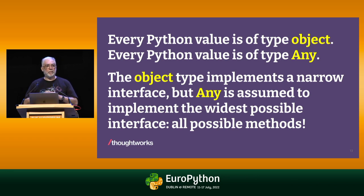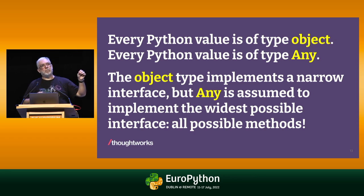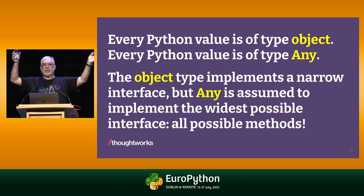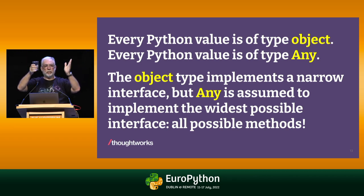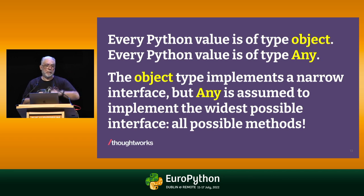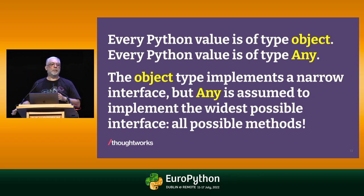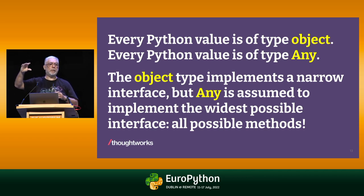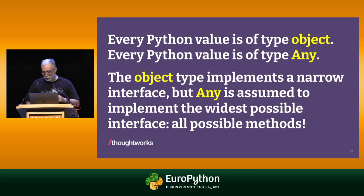Any satisfies every interface — it's like this magical interface that contains all possible methods that exist today or that will ever exist. So this is a crucial difference. If you think of subtypes as sets, the biggest set is at the top: object is the set of everything. As you go down to more specific, specialized types, they usually have fewer instances. But on the other hand, the interface grows — at the top of the class hierarchy the interface is narrower, and as you go down it gets wider and more specialized.